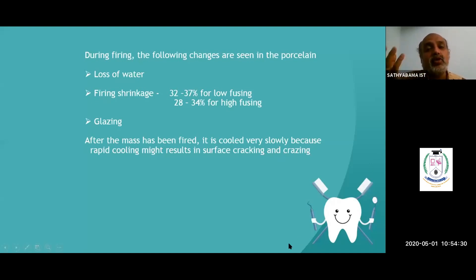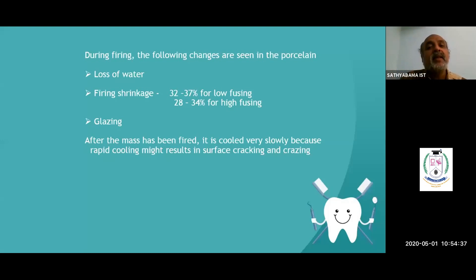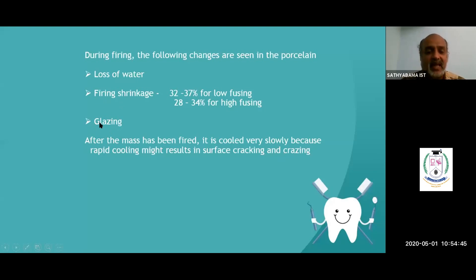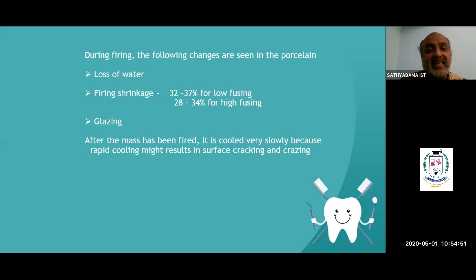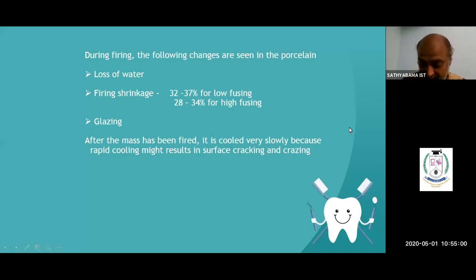Once shrinkage has happened and firing is over, check whether the morphology is correct. If not, add more ceramic particles, fire again, and finish it. Finally we do glazing — as discussed when covering the components of ceramic, glazing is the polishing of the ceramic. It can be add-on ceramic glaze or self-glazed ceramic.